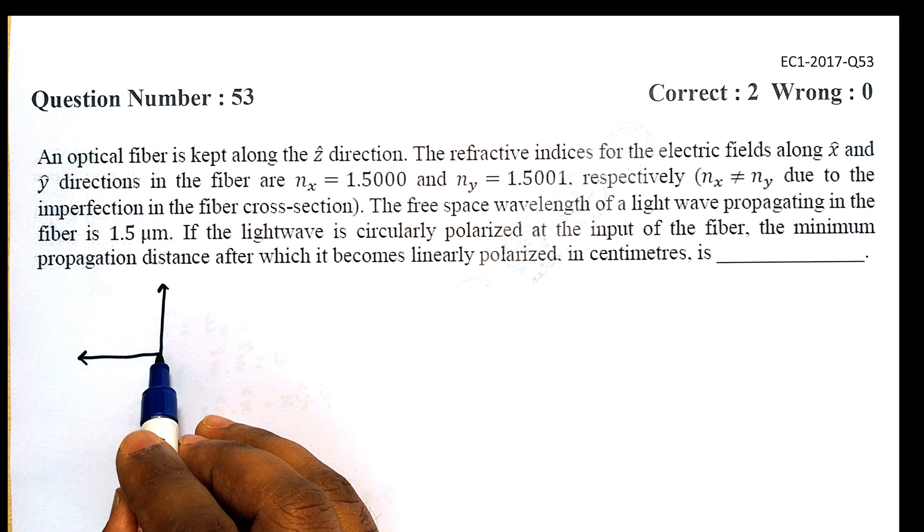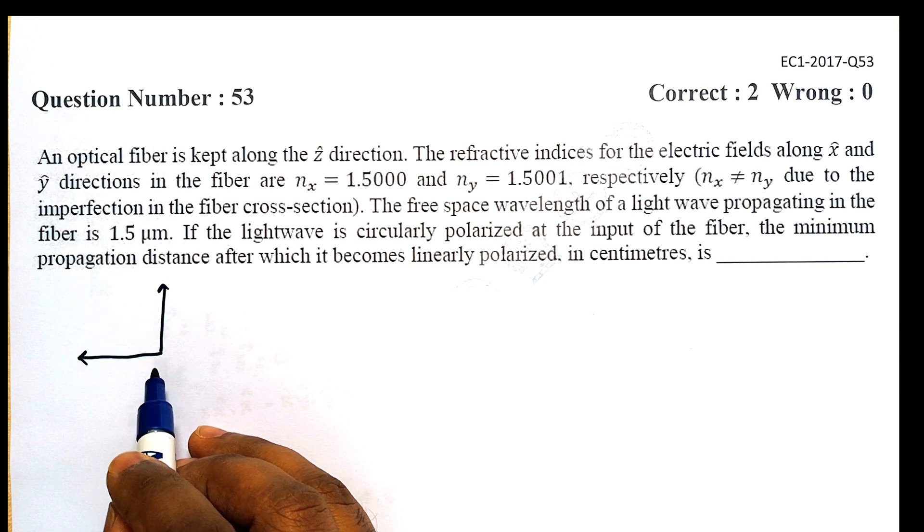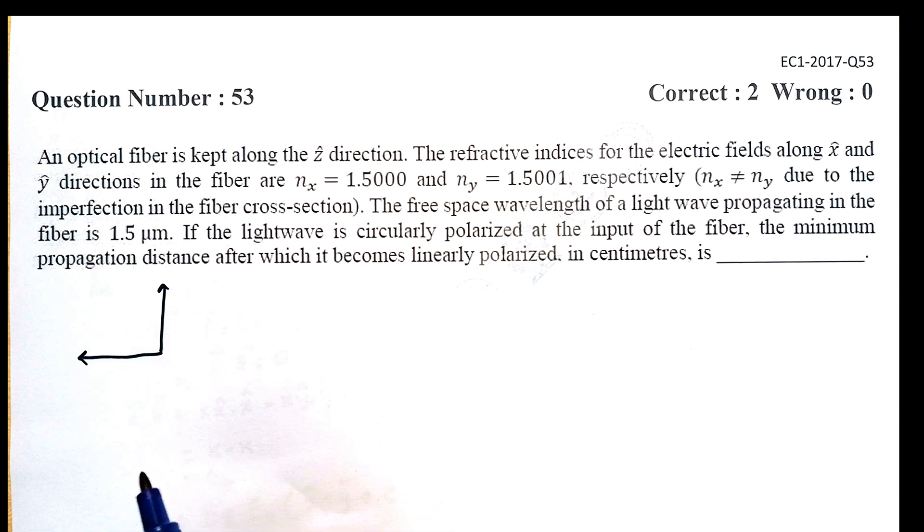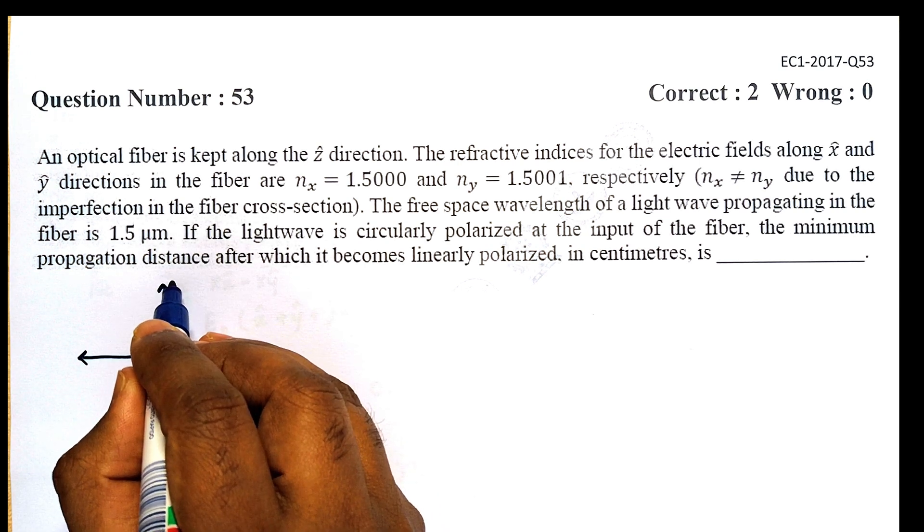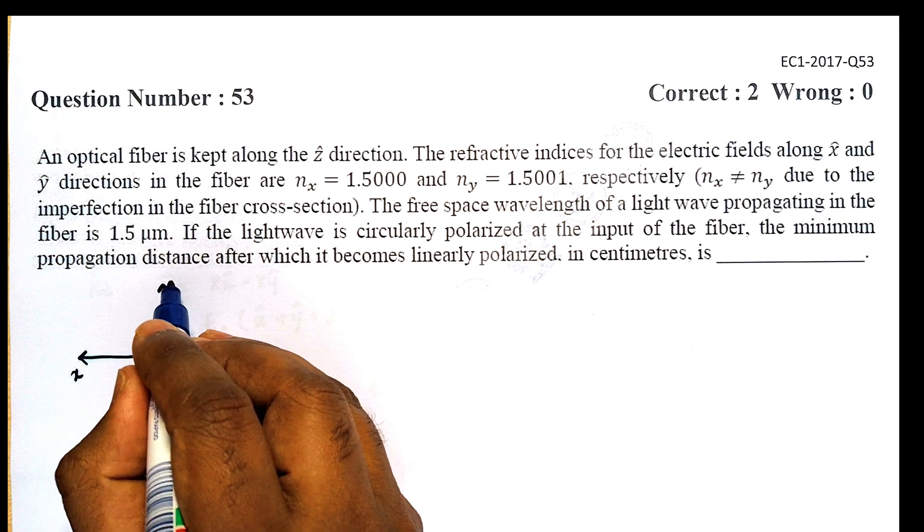And we have to find at what minimum distance it can become linearly polarized. For linear polarization to occur, these electric fields—let's say they are X and Y along the X and Y axis—